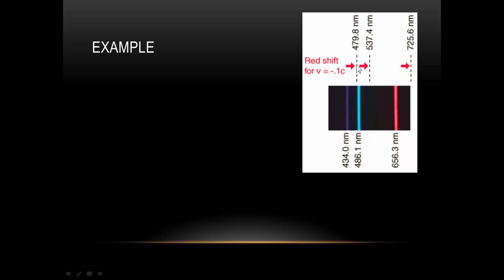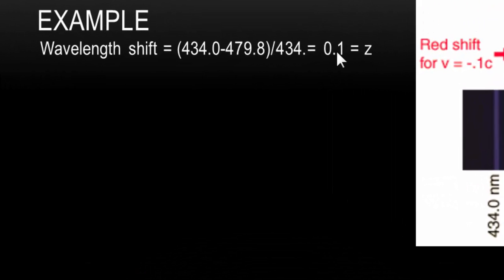Well, we find the difference in the wavelength and divide by the original wavelength. The difference is here, divided by the original, which is 434, and we get a value of 0.1. So the redshift is equal to 0.1.